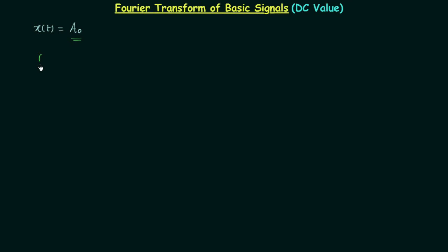Let's write the condition for a signal to be absolutely integrable: the integration from minus infinity to infinity of mod x(t) dt should be less than infinity. We are calculating the area of signal mod x(t), and that area should be less than infinity or finite.